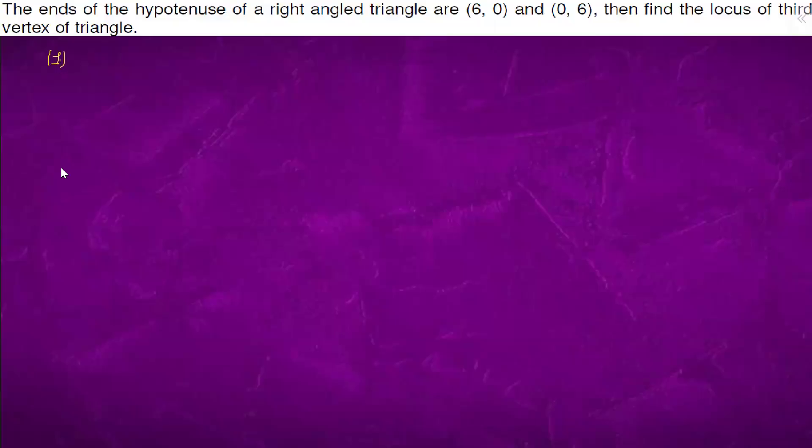So what will happen? We have a right angle triangle with hypotenuse. This is (6,0), this is (0,6). We have to find the locus of third vertex. We will take it as (h,k). So we will apply Pythagoras in ABC.